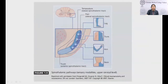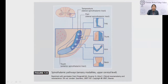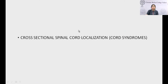Even within the spinothalamic tract — which subserves pain, temperature, and crude touch — there is further organization: crude touch fibers are more ventrally placed, while fibers subserving temperature and pain are more dorsally placed. The lamination here is: sacral fibers are lateral and cervical fibers are more medial.